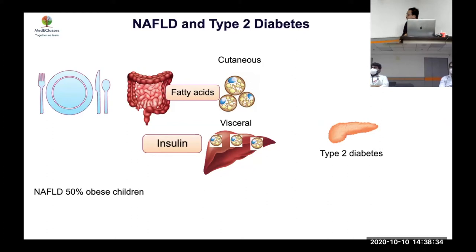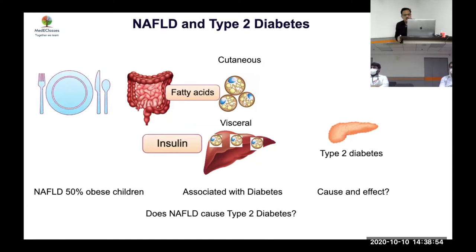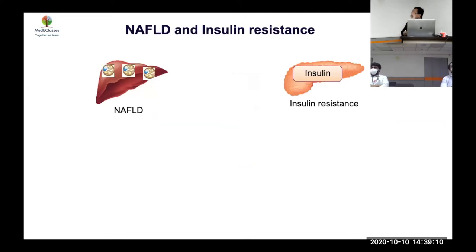We know that 50% of obese children have NAFLD. It's important to distinguish NAFLD from NASH — NASH implies hepatic damage has already occurred and is associated with diabetes. The question is: which is the cause and which is the effect? They started with the hypothesis of evaluating NAFLD as a causative agent for type 2 diabetes.